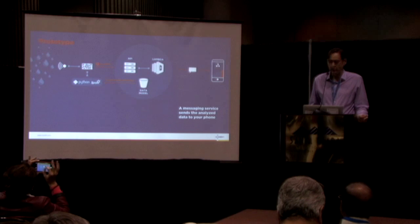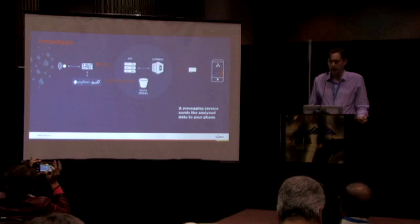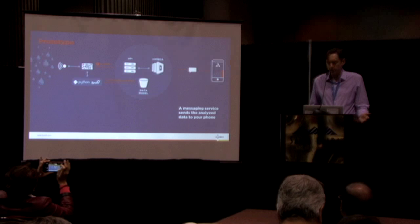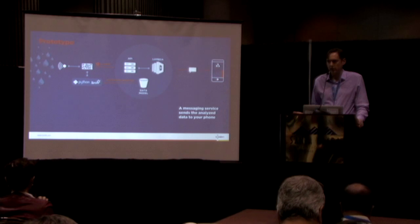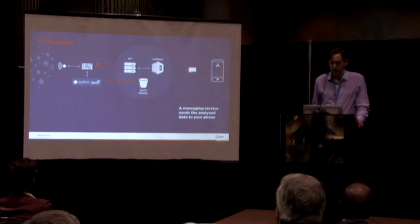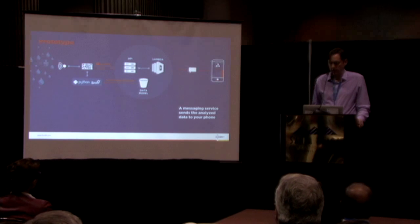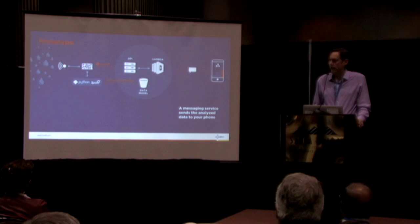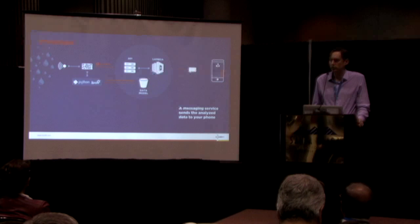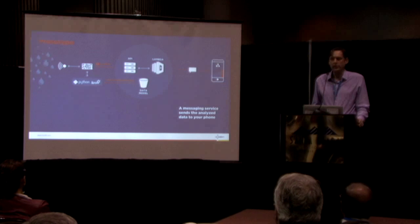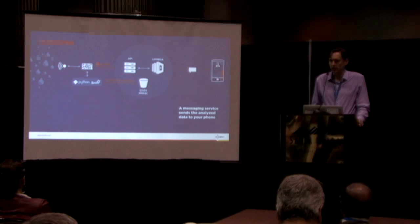It ends up being the same result in this particular example — you get a notification on your phone that the humidity is an issue. But critically, you can act locally on the left of that diagram and do something about the humidity even without the cloud being involved, which is important for environments in which connectivity is troubling — where it's up or down and you're running on cellular.